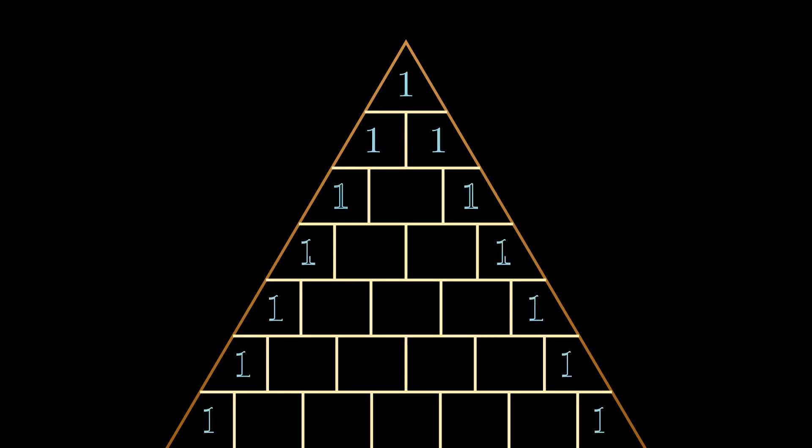Every box which touches the edge of the triangle will have a one inside of it. Now that we have the frame for the triangle, we can start to list the rules.